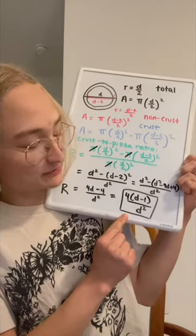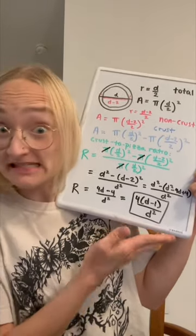And there you have it. The crust-to-pizza ratio is a rational function with respect to the pizza size. Let's see what this function looks like.